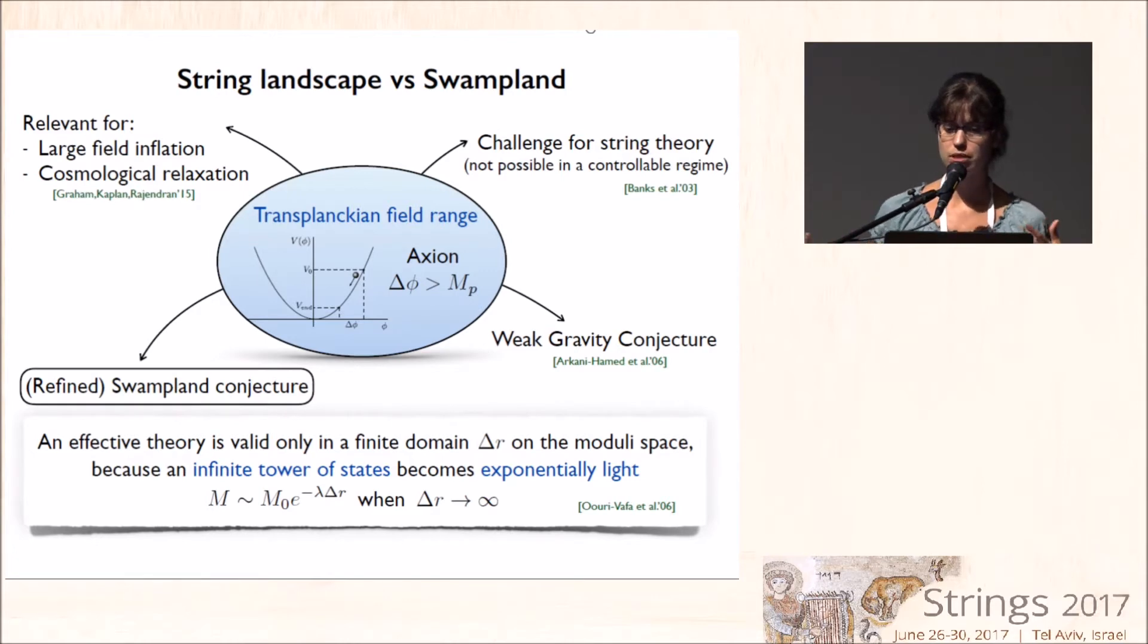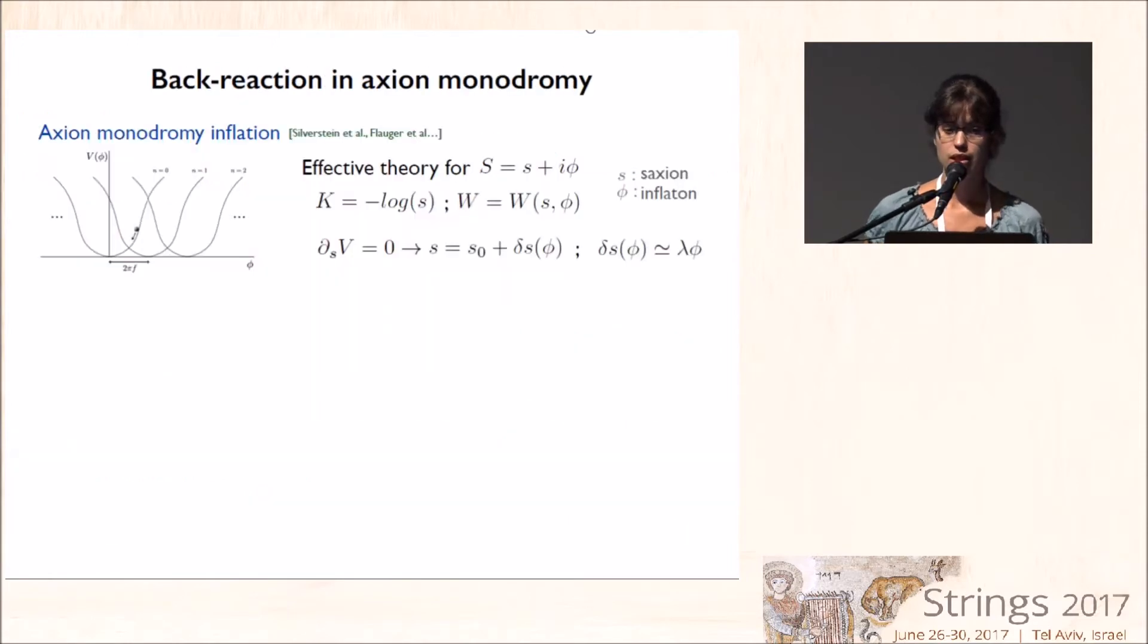So how this constrains and applies to inflation, which we need axions. So let me focus on axion monodromy, which is a proposal in which one can achieve a large field variation, even if the fundamental periodicity of the axion is subplanckian.